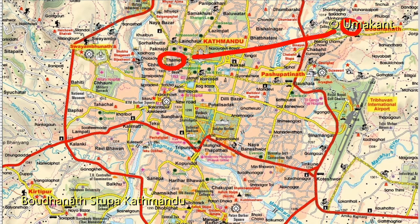If you are going from Pashupatinath — this is Pashupatinath — from Pashupatinath to Boudhanath is about 3 kilometers. From Tribhuvan Airport to Pashupatinath is about 3 kilometers, and from Pashupatinath to Boudhanath is about 3 kilometers.